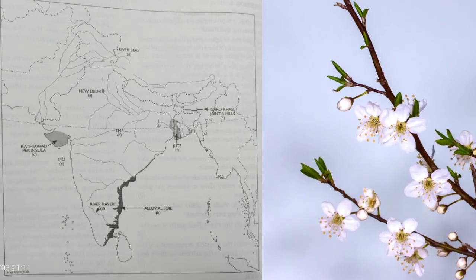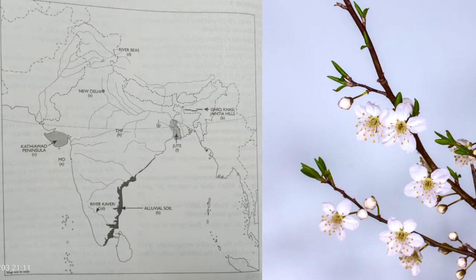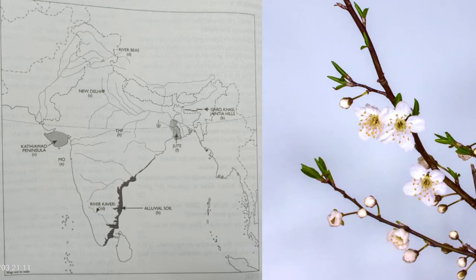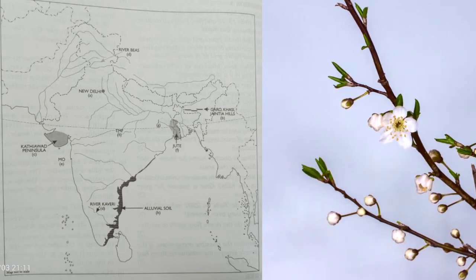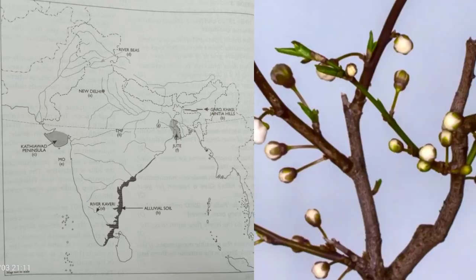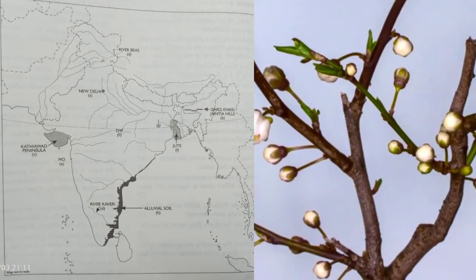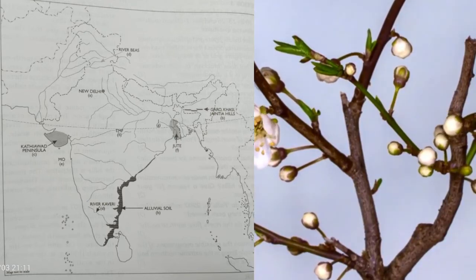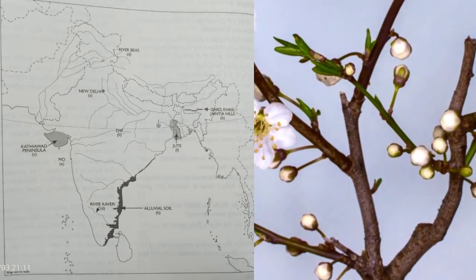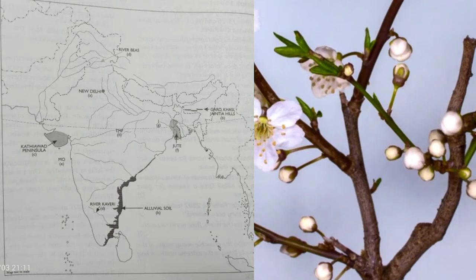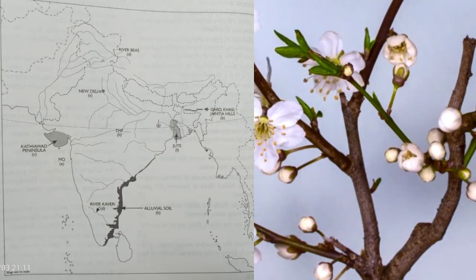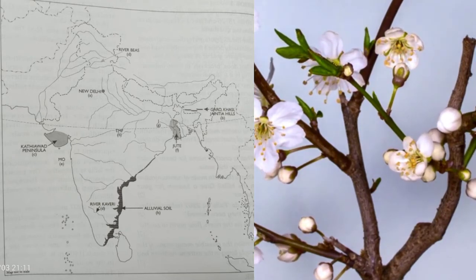Next map: 'A' — mark New Delhi with a dot. 'B' — Garo, Khasi, and Jaintia Hills. 'C' — Kathiawar Peninsula. 'D' — river Beas and Kaveri. Print 'MO' over the offshore oil reserve — 'E'. Mark an area where jute is grown — 'F'.